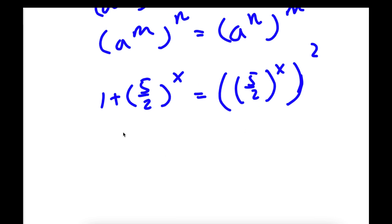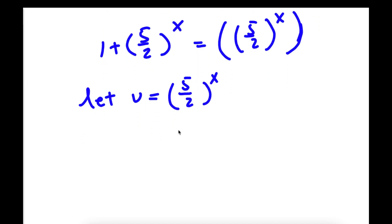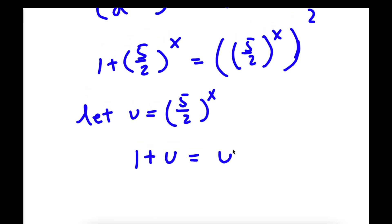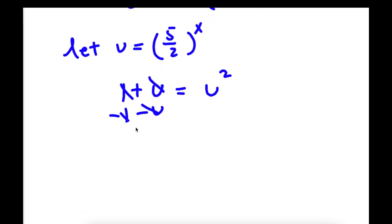Now I'm going to let u equal 5 over 2 to the power of x. Substituting u in for 5 over 2 to the power of x, I get 1 plus u is equal to u squared. Subtracting u and 1 from both sides gives me u squared minus u minus 1 is equal to 0.